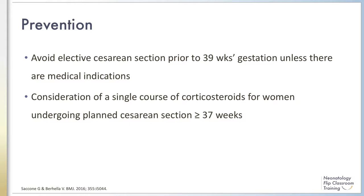The best approach to preventing TTN is to reduce the incidence of cesarean section, which contributes significantly to the respiratory morbidity in term newborns. Although mortality from TTN is not a concern, it is a very common and frustrating condition that sometimes requires transfer of the baby to the neonatal ICU, separation from the mother, multiple diagnostic studies, delay in discharge, and prolonged hospitalization.